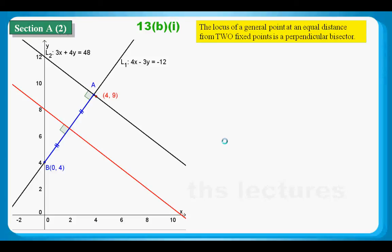As far as you can see, besides gamma being a perpendicular bisector, it is also parallel to L2. So, this is what we need to describe in part B1.